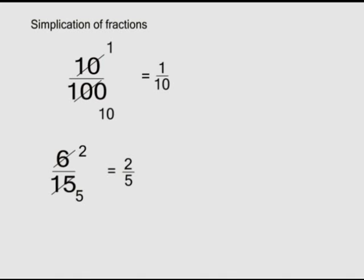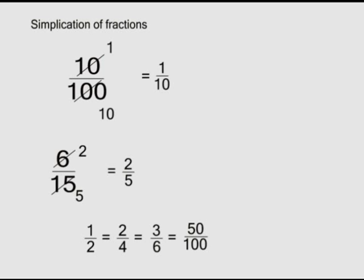Simplification does not change the fraction; it simply makes it easier to work with small numbers. When you multiply or divide the numerator and denominator by the same factor, the fraction does not change its value. That is to say, one over two is equal to two over four, which is equal to three over six, and equal to fifty over hundred. These are called equivalent fractions.